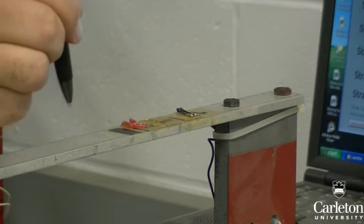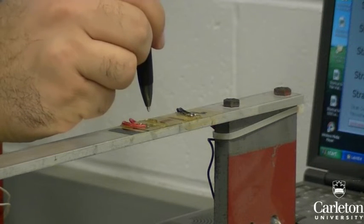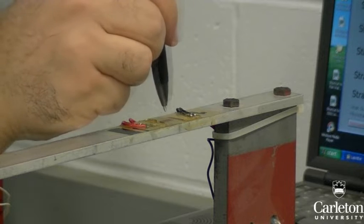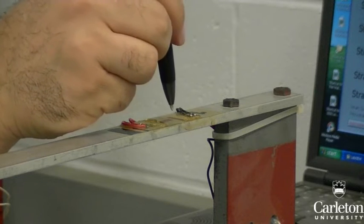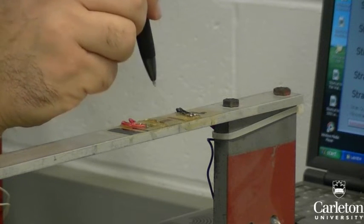Gauge one on the computer is the longitudinal strain which corresponds to epsilon one in the table. Similarly, gauge number two is the perpendicular strain which corresponds to epsilon two.